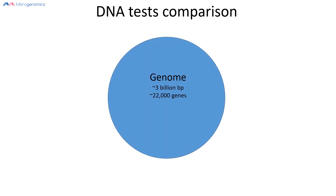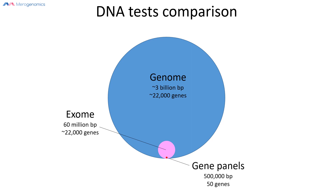Another comparison between full genome and other types of DNA tests is how much material is actually covered. If we assume that this circle represents the full genome DNA sequence, then the size of the exome — all of the genes being probed — is represented by the pink circle. Typical gene panels containing up to 50 genes are even smaller, represented by the red circle. Assessing the full genome looks at far more information, and this circle represents only half of the genome, equivalent to what you would inherit from one of the two parents.